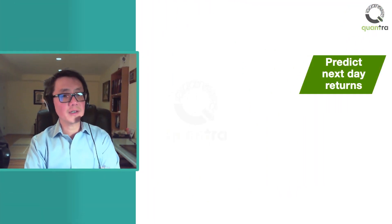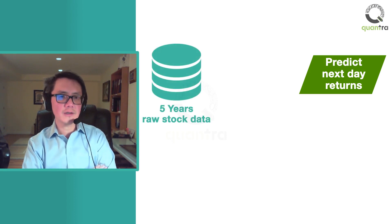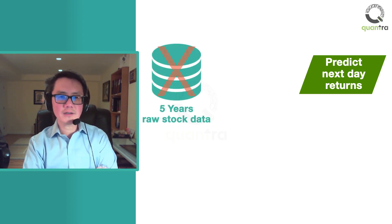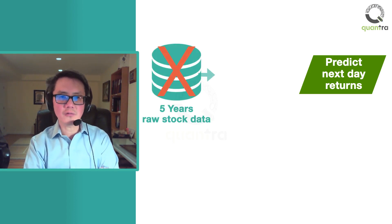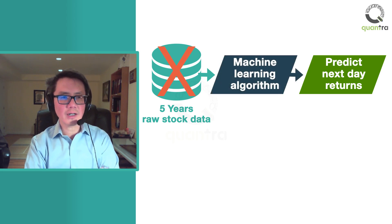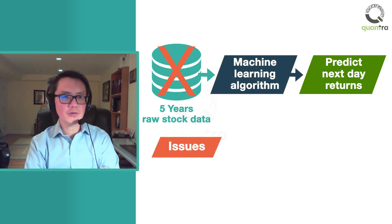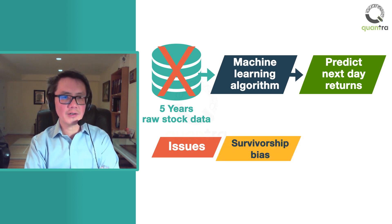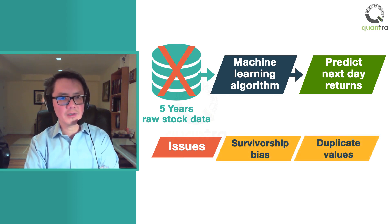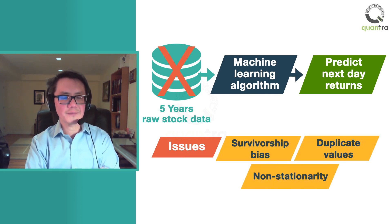For example, if you want to predict the next day's stock returns using 5 years of stock data, you can't directly feed the raw price data to the machine learning algorithms. Raw data has several issues, such as survivorship bias, duplicates, and non-stationarity.